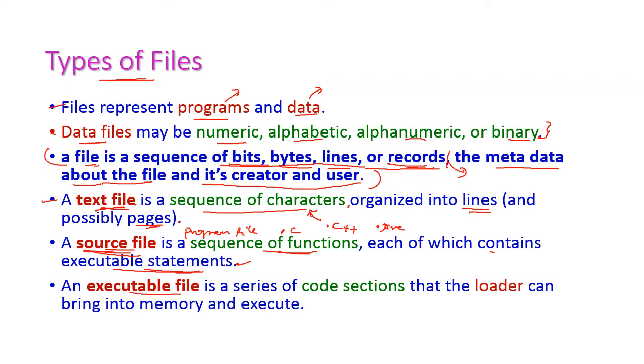The next one is executable files. Executable file is a series of code sections that the loader can bring into memory and execute. If you double click this executable file, then it will start executing. The general categories of files are the text file, source file, and executable files.